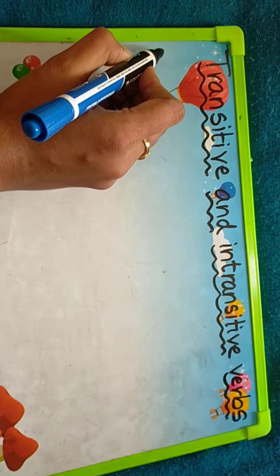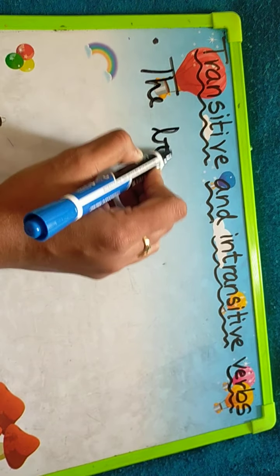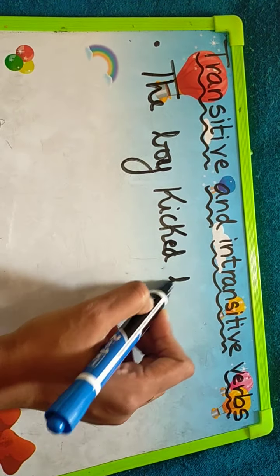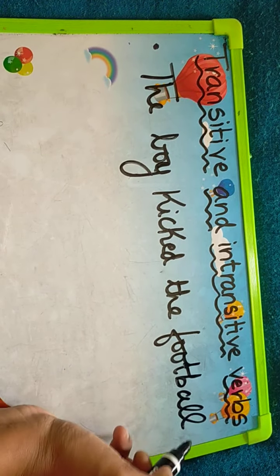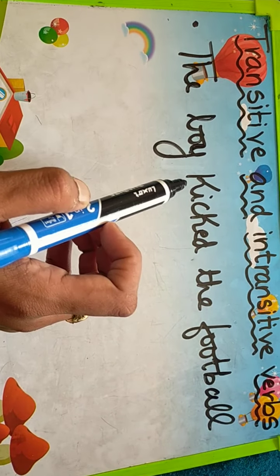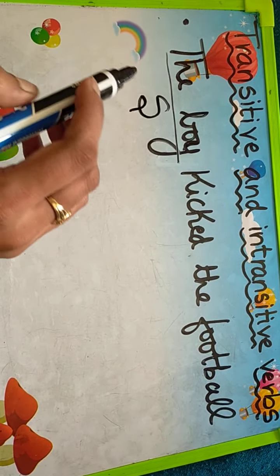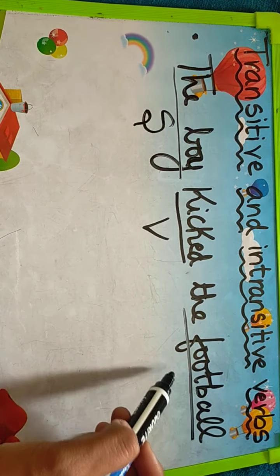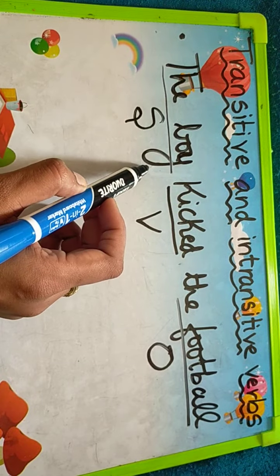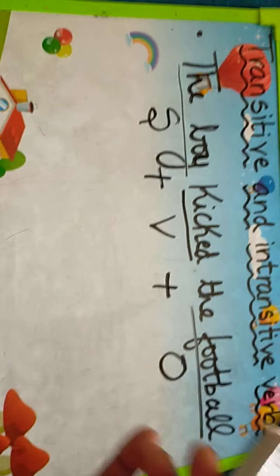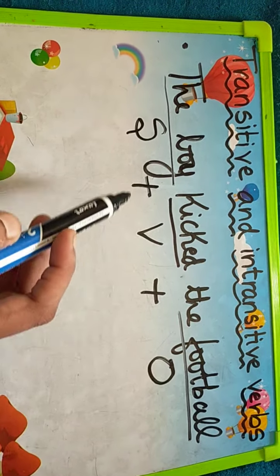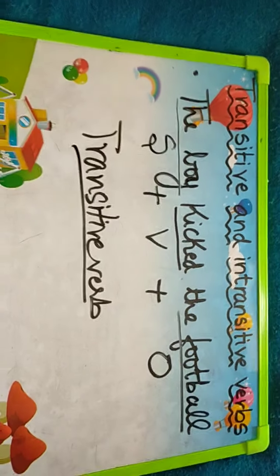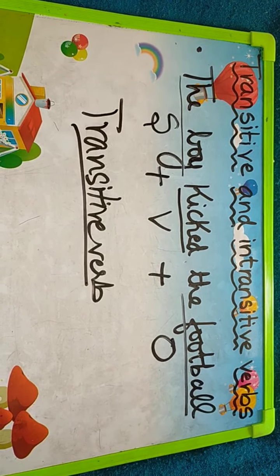For example: 'The boy kicked the football.' In this sentence, 'the boy' is the subject, 'kicked' is the verb — it is an action. And what did he kick? He kicked the football, so 'football' is the object. This sentence comprises subject plus verb plus object. After the verb, you can see there is an object, so this verb is known as a transitive verb. When there is an object along with the verb, that particular verb is known as a transitive verb.